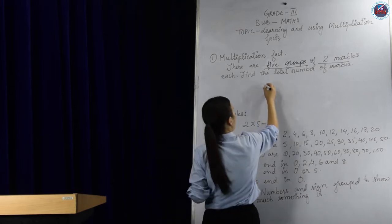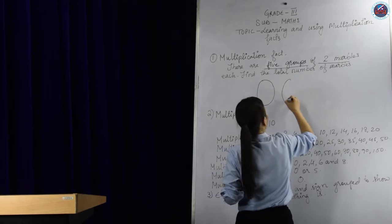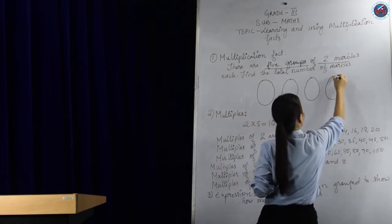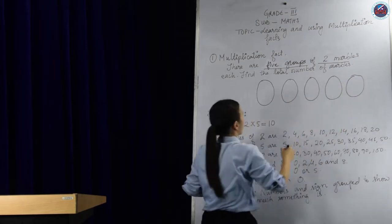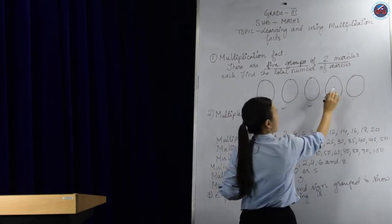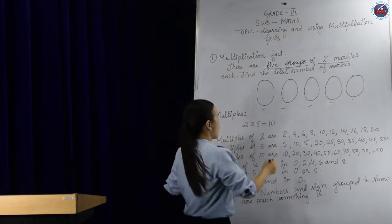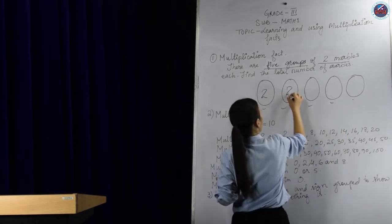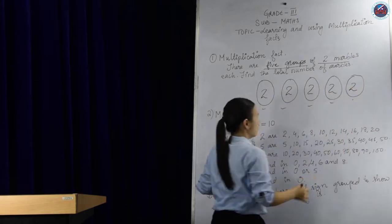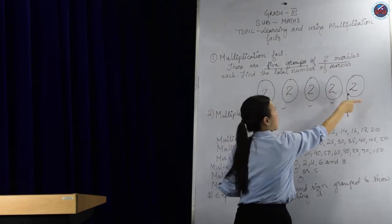So let's make 5 groups. I'm going to use a circle — 1, 2, 3, 4, and 5. So I have made 5 groups. And it says 2 marbles each, so I'm going to put 2 in each of these groups. So that's 5 groups of 2 marbles each.